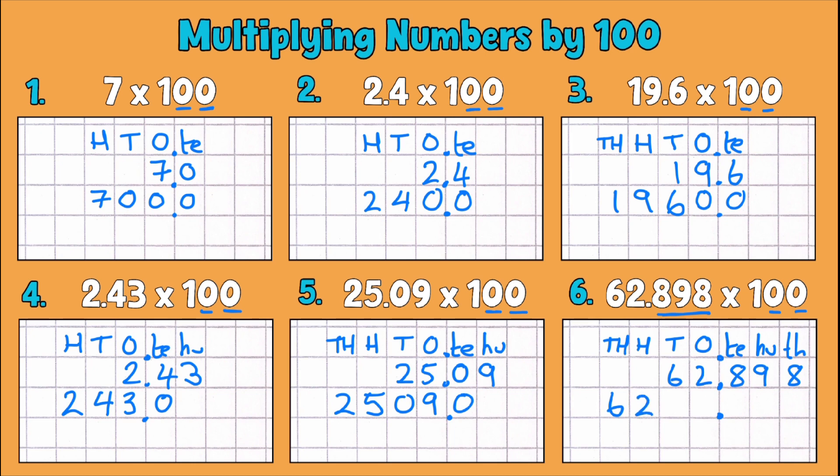2 ones becomes 200. 8 tenths becomes 80. 9 hundredths becomes 9 whole ones. And 8 thousandths becomes 8 tenths.